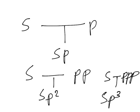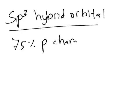That's the main idea of hybridization. Let's talk about each of them separately now. The first one I mentioned was the sp³ hybrid orbital. Because it has three p's, it is 75% p character and 25% s character.